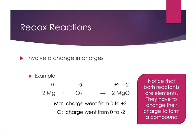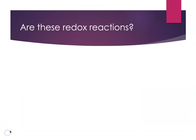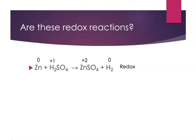Since both reactants are elements, to form the compound they had to change their charge — this is evidence of a redox reaction. I want my students to be able to look at a balanced equation and decide whether it's redox or not redox. Let's look at some examples. We have zinc reacting with sulfuric acid to make zinc sulfate and hydrogen gas. I notice right away I've got elemental zinc as a reactant and elemental hydrogen as a product — so yes, this is going to be a redox reaction. The zinc has a charge of zero; hydrogen ions in H2SO4 have a charge of plus one; the sulfate stays as sulfate. On the product side, zinc ions have a charge of plus two, and hydrogen is an element with a charge of zero. The zinc changes charge and the hydrogen changes charge — this is a redox reaction. We knew that even before we looked at the charges.